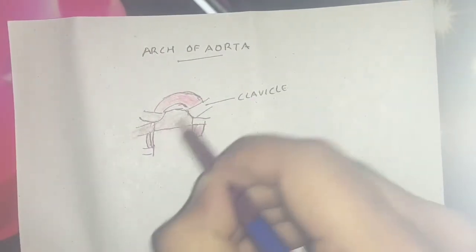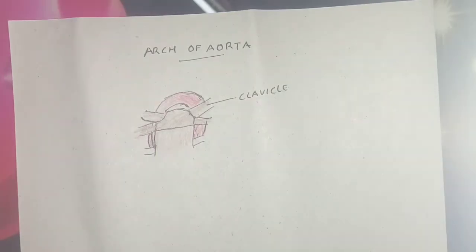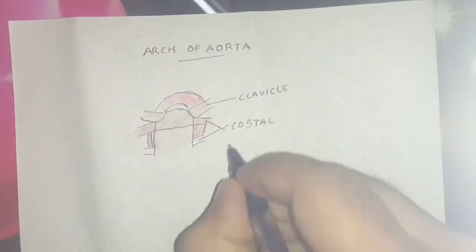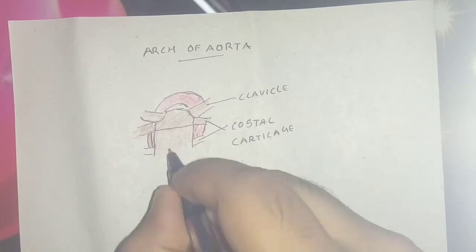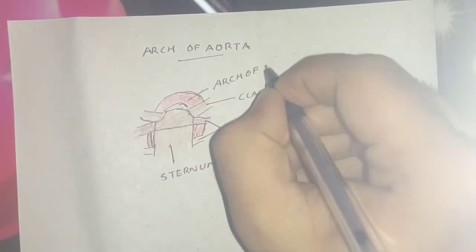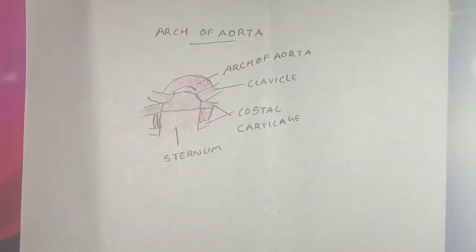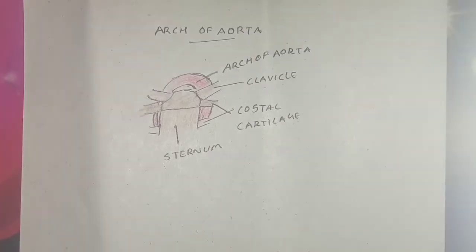It thus arches over the root of the left lung. It ends at the lower border of body of fourth thoracic vertebra by becoming continuous with the descending aorta. Thus the beginning and ending of the arch of aorta are at the same level, although it begins anteriorly and ends posteriorly.